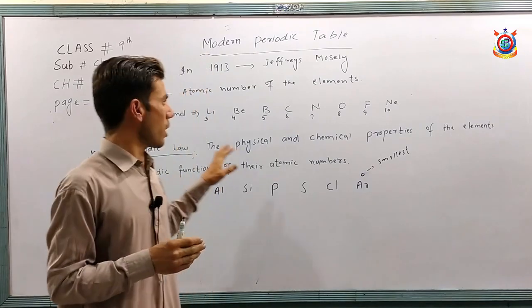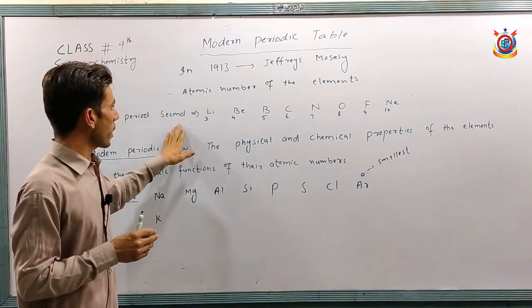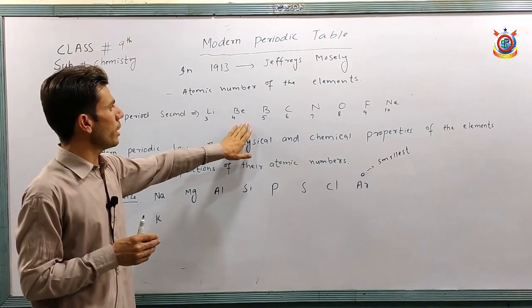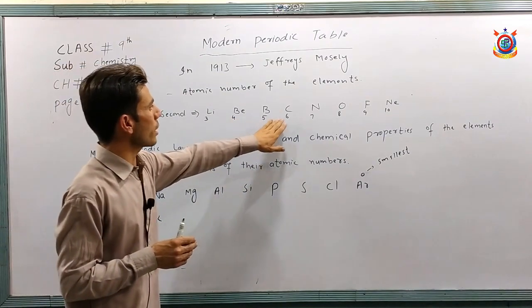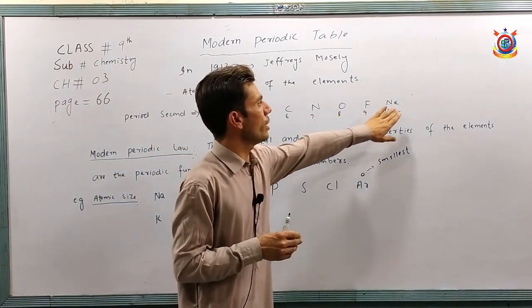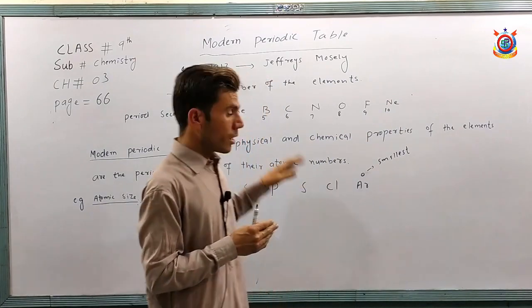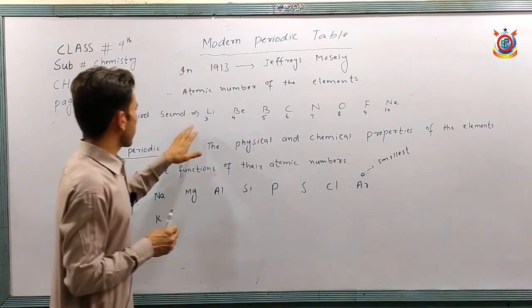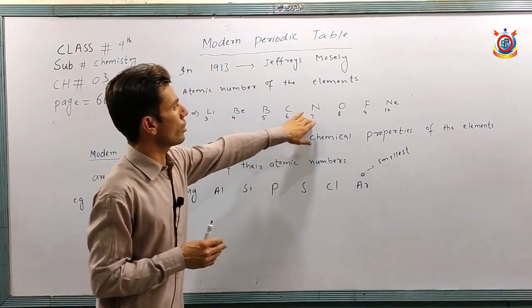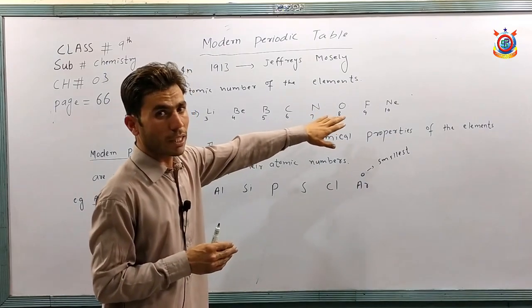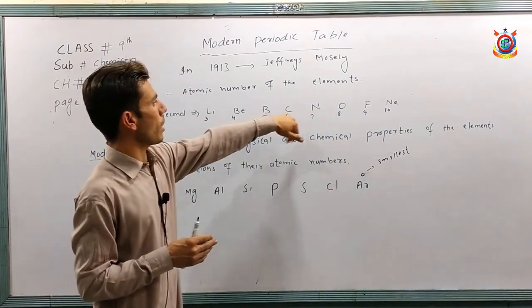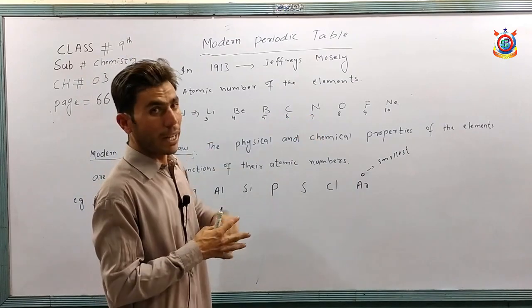For example, period number two contains elements such as lithium, beryllium, boron, carbon, nitrogen, oxygen, fluorine, and neon — and it contains 8 elements.